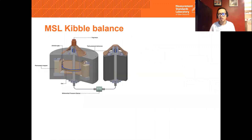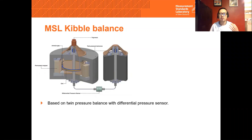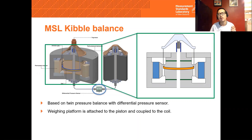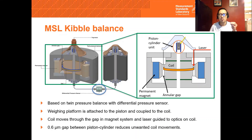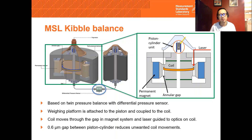Here we describe the MSL Kibble Balance. It is based on twin pressure balances connected to a very sensitive differential pressure sensor, which acts as a force comparator. A weighing platform is attached to the piston of one of the pressure balances and is rigidly coupled to the coil with rods. There is a gap in the magnet system where the coil can move through vertically. A laser beam is guided to the coil to measure the velocity. A very small gap between the piston and cylinder reduces unwanted coil movements. The MSL Kibble Balance is designed to be simpler, more novel, and more economical than others. This is the only Kibble Balance that uses pressure balances — there is no cookbook recipe for it, so there are additional challenges to overcome.